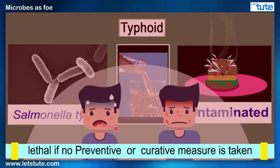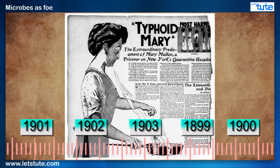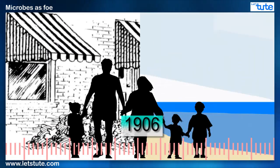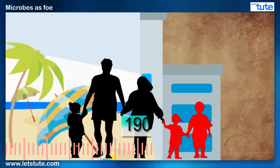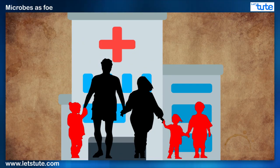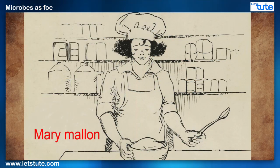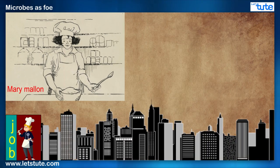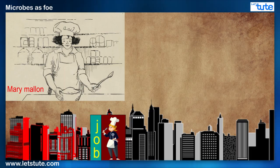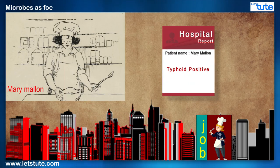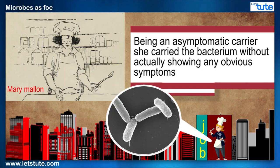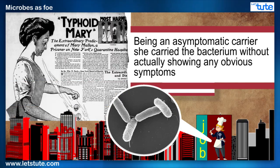Let us consider the well-known case of Typhoid Mary. In the summer of 1906, when Charles Warren took his family on vacation, he found that in just a few weeks, half his family had fallen ill with typhoid. It was suspected that the recently hired cook Mary Mallon could have been the cause. Mallon's employment history involved typhoid outbreaks which had followed her from job to job. She was reported to be typhoid positive. Being an asymptomatic carrier, she carried the bacterium without actually showing any obvious symptoms, and came to be infamously known as Typhoid Mary.